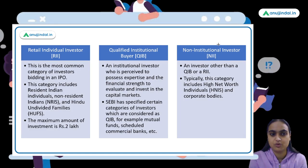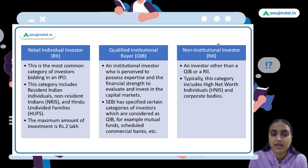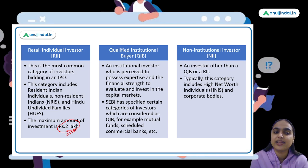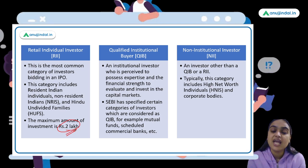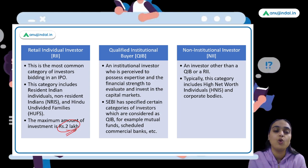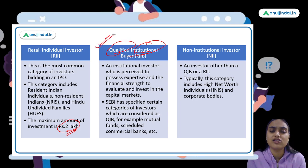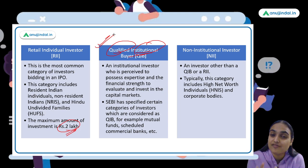Now talking about the types of investors in IPOs — there are three major categories. First, Retail Individual Investors: these are resident individuals, non-resident Indians, and certain Hindu Undivided Families who invest lesser amounts, up to two lakh rupees. This is the most common and simple category of investors. Second, Qualified Institutional Buyers (QIBs): these are big institutions which have knowledge about financial and capital markets — they are qualified enough to evaluate and decide how much to invest.